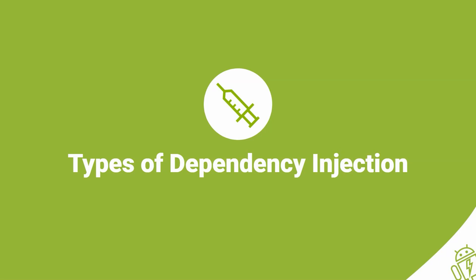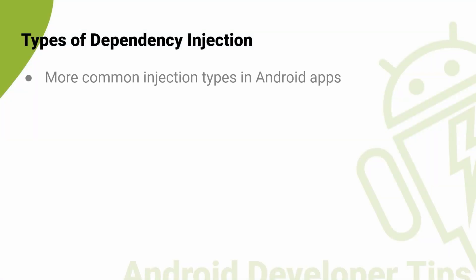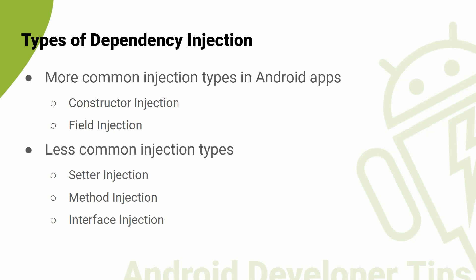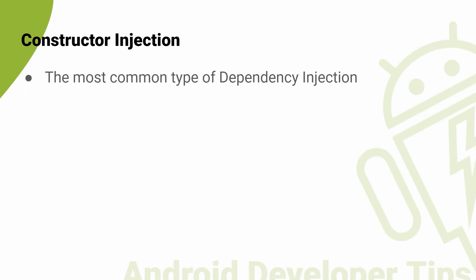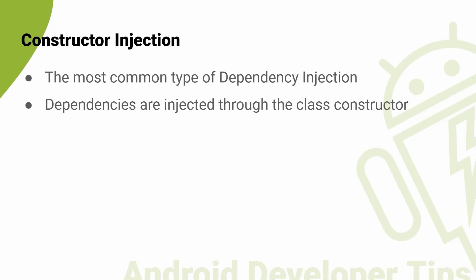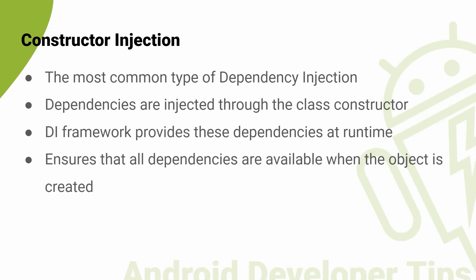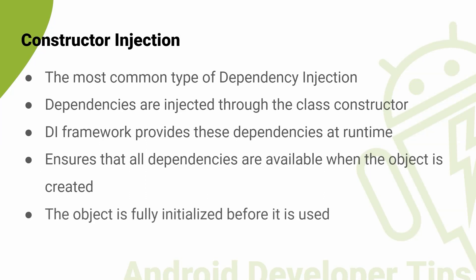Let's talk about types of dependency injection. There are two main types of dependency injection in Android DI frameworks: constructor injection and field injection, and some other types including setter injection, method injection, and interface injection, which I will skip in the Android context. Constructor injection is the most common type. In this type of DI, dependencies are injected via the constructor of a class. The class declares its dependencies as constructor parameters, and the DI framework provides these dependencies at runtime. Constructor injection ensures that all dependencies are available when the object is created, and the object is fully initialized before it is used.